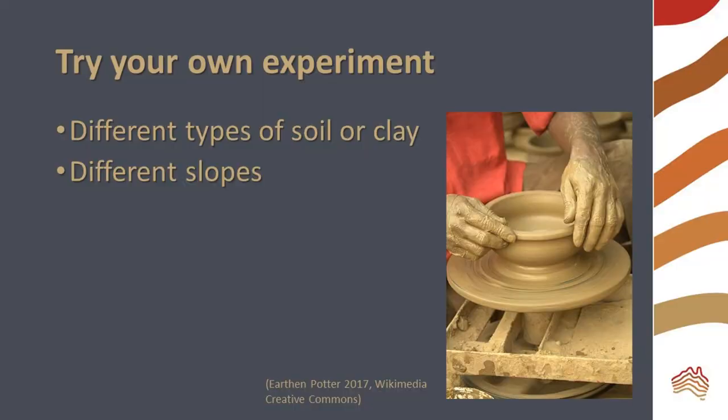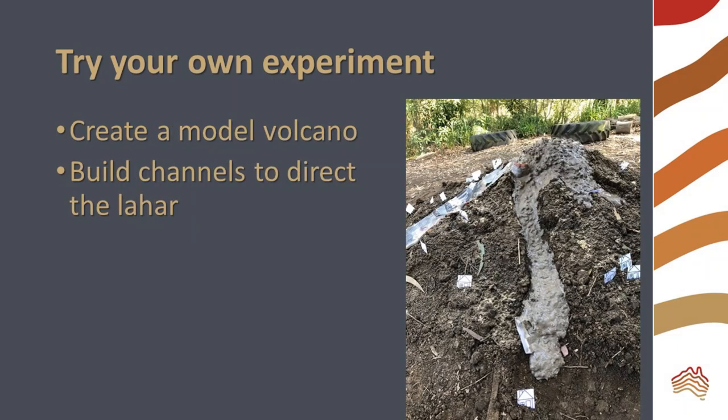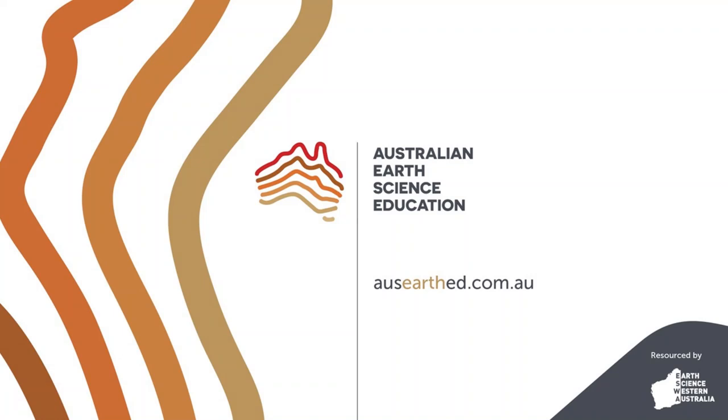What is happening to our model lahars? Try your own lahar experiment. Explore the effect of different types of soil or clay. You might time the flow down different slopes. If you have a pile of dirt, you can create a big model volcano and observe lahar flow. You can build channels to direct the flow and observe the effects. You can find out more information about volcanoes on the Australian Earth Science Education blog.